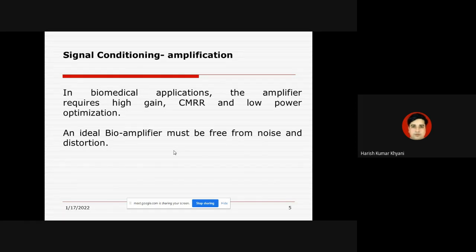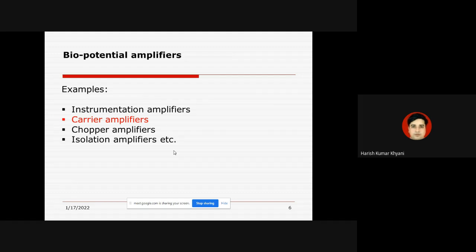In biomedical applications, normal amplifiers do not work because the amplifier should have high gain, high common mode rejection ratio, and low power consumption. Most importantly, the biomedical amplifier must be free from noise and any kind of distortion, since it is a very critical field. This slide shows important examples of bio-potential amplifiers, including instrumentation amplifiers mainly used in ECGs and EEGs.